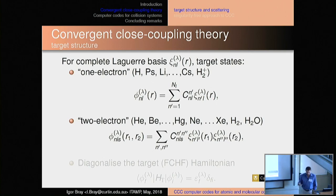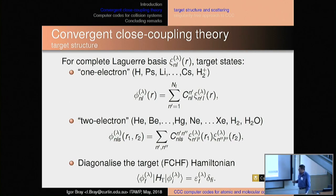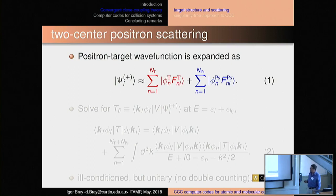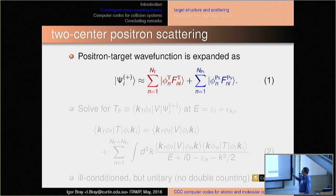For two electrons, we use a double combination, and we can add non-orthogonal orbitals. For helium, for example, you need some short-ranged functions to get good correlation. But in the end, we diagonalise the target Hamiltonian — maybe a frozen-core Hartree-Fock Hamiltonian — to get our target states. Here's an example for positron scattering: how the target wave function would be expanded.